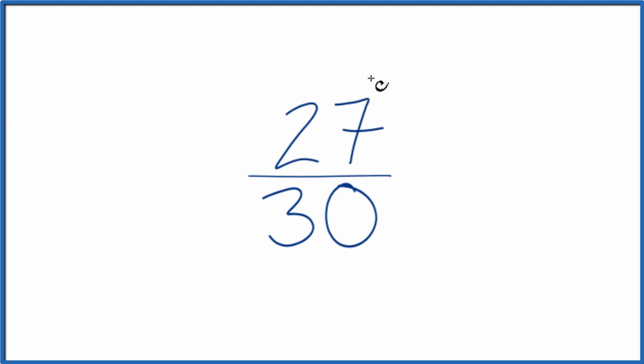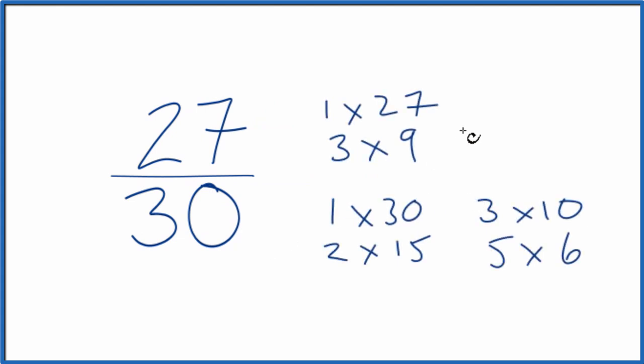So these are the factors for 27 and 30. So it looks like when we look at the factors for 27 and then 30, the greatest common factor is going to be 3.